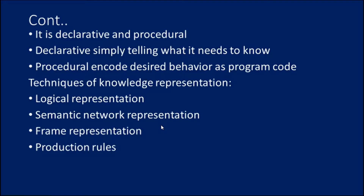There are various levels of knowledge: the knowledge level, the logical level, and the implementation level. The knowledge level is the first level of the knowledge-based agent, where we specify what the agent knows and what the agent's goals are. With these specifications we can fix its behavior. For example, suppose an automated taxi agent needs to go from station A to station B and knows the way — that is the knowledge level.